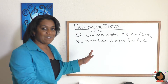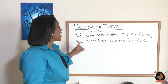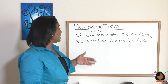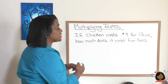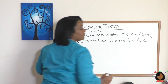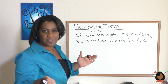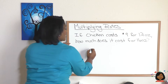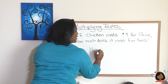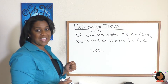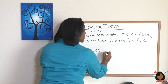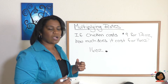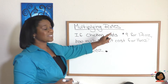Here's what I mean. I have a problem: if chicken costs nine dollars for 12 ounces, how much does it cost for 16 ounces? We start with what we're looking for — we're looking for 16 ounces and the cost of it. So let's write 16 ounces down, and we're going to multiply it by the rate we have in our problem.